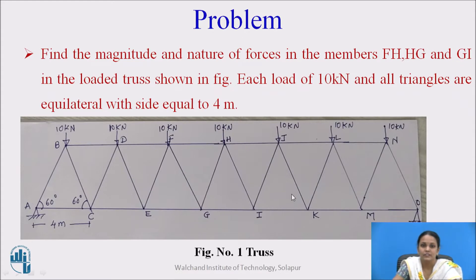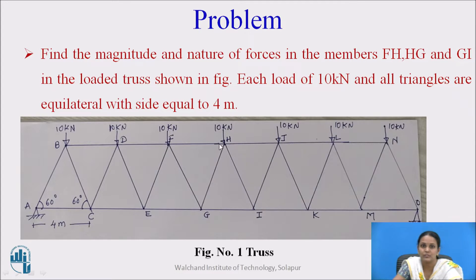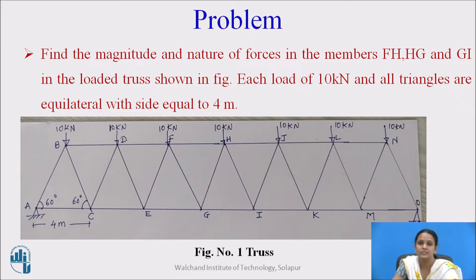In this given truss, we have to find the magnitude and nature of the force in members FH, HG, and GI. So we will see how to find the forces in these three members by method of section.